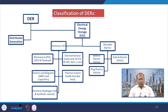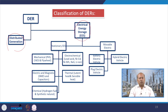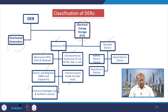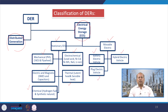Electrical energy storage systems can be either stationary or movable. Stationary types include mechanical, electrochemical, thermal, electric and magnetic, and chemical energy storage systems. Movable electric storage includes battery electric vehicles, hybrid electric vehicles, and plug-in electric vehicles. This is how battery energy systems and distributed energy resources are classified.